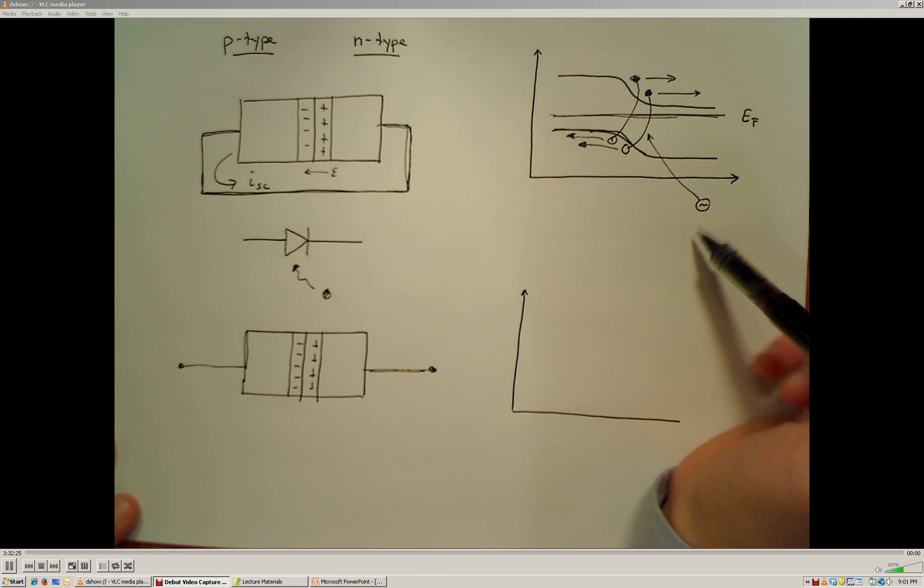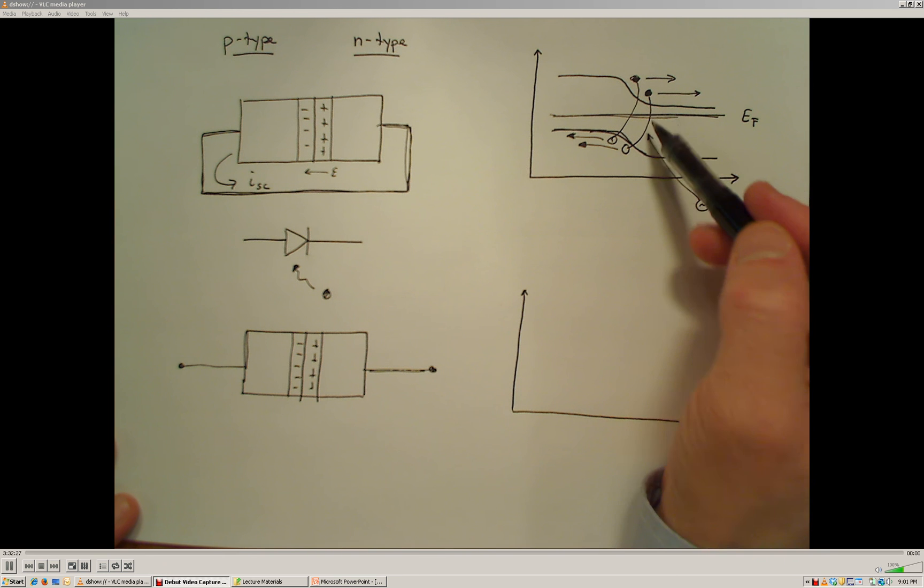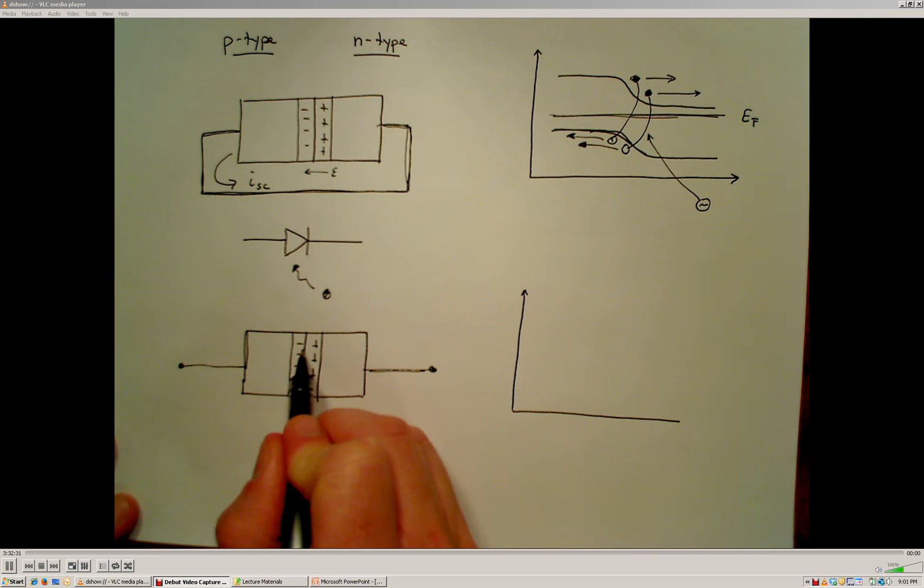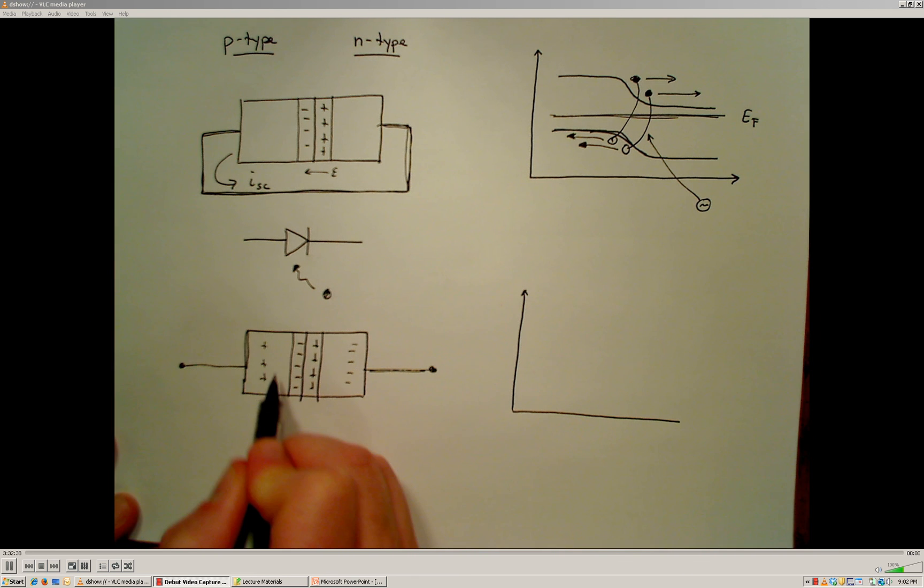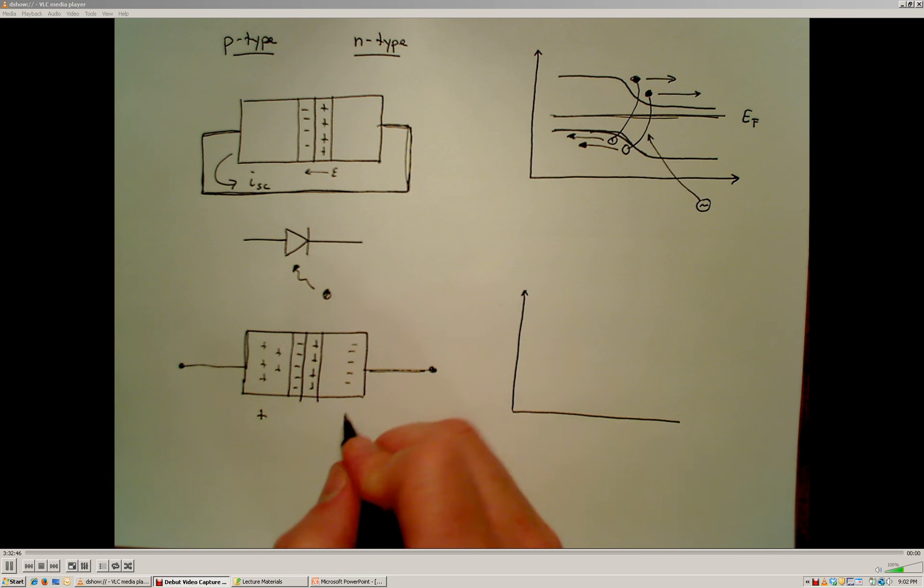So when we get electron-hole pairs being formed here, the electrons are going to be swept over to the cathode side, and the holes that are generated are going to be swept over to the anode side. So essentially what's going to happen is we're going to get a net positive charge on the anode side and a net negative charge on the cathode side. And this process will continue,